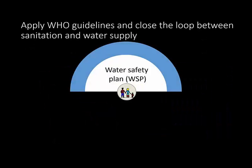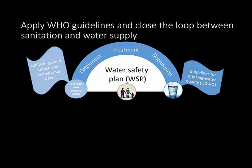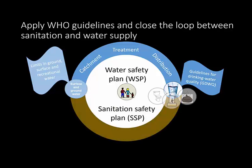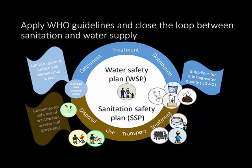The idea for the manual came from the already successfully implemented Water Safety Plan that covers the process of surface and groundwater catchment to its treatment and distribution for safe drinking water. This manual builds on the guidelines for drinking water quality and the limits of ground, surface, and recreational water. Sanitation Safety Planning could close the loop between sanitation and water supply while focusing on wastewater contamination, treatment, transportation, use and disposal issues, and make use of the WHO guidelines.